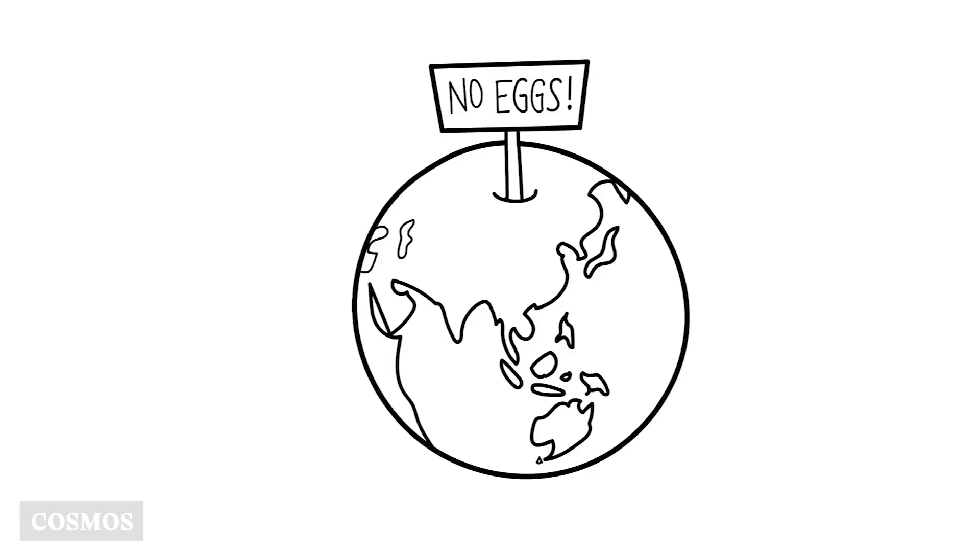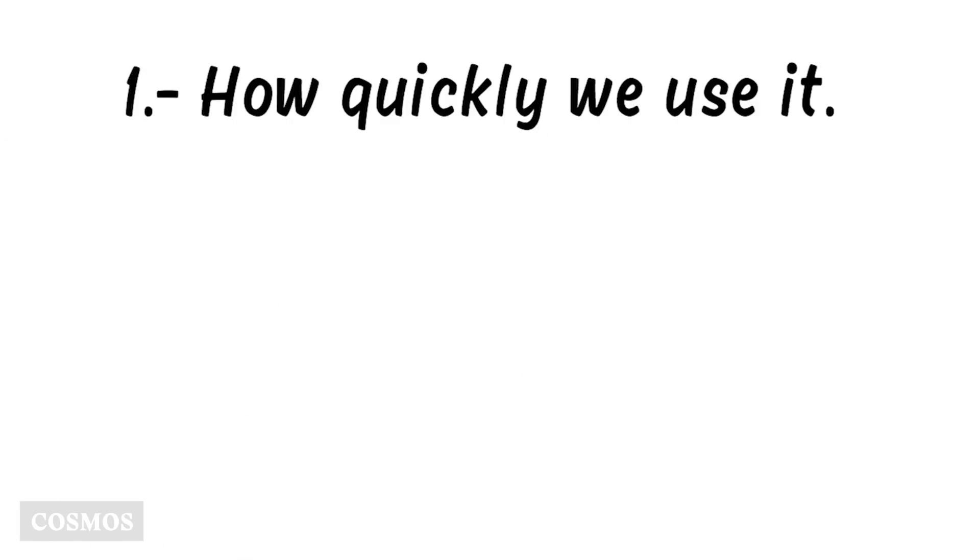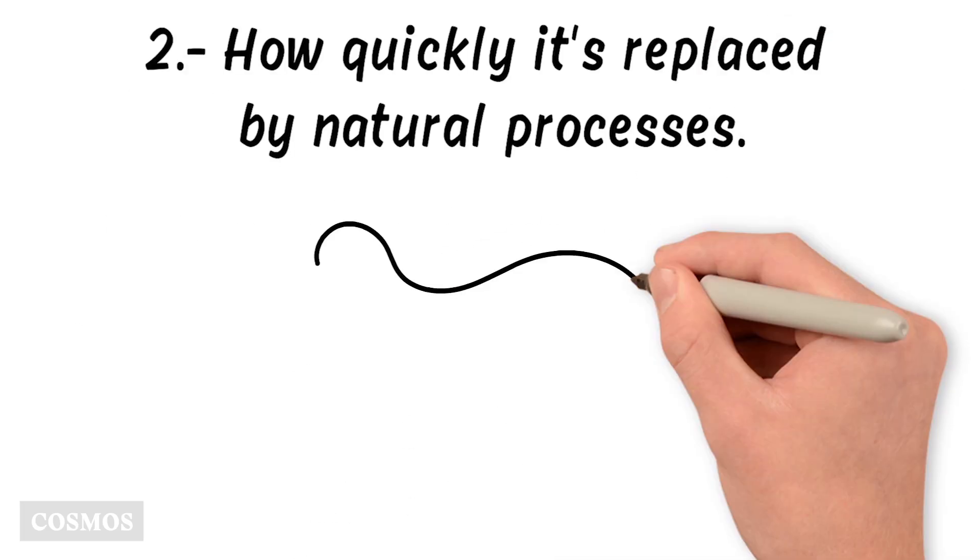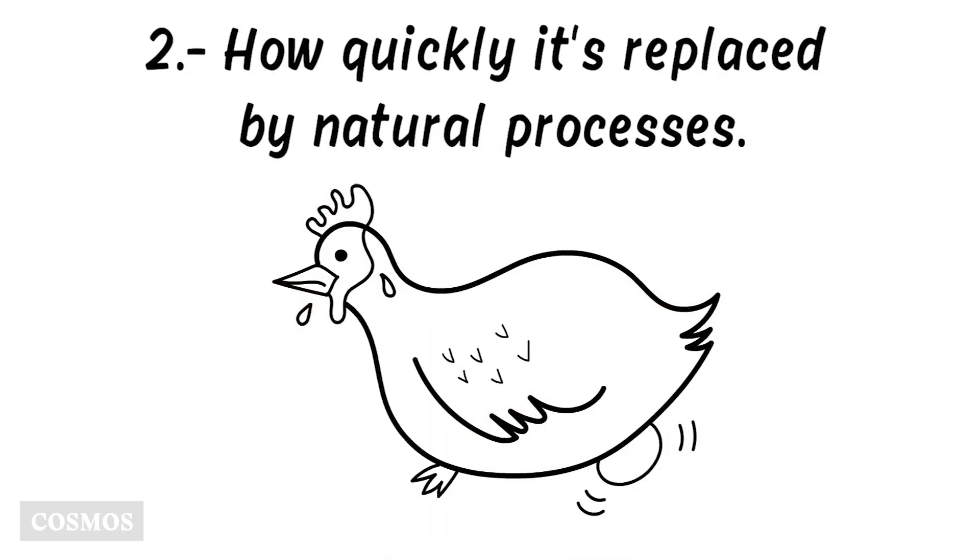Whether or not we run out of a natural resource depends on two things. How quickly we use it, and how quickly it's replaced by natural processes. This is called its replacement time.